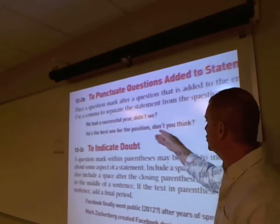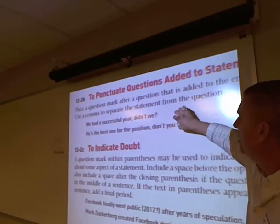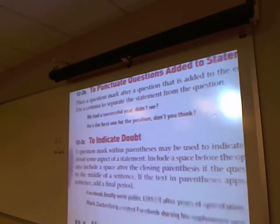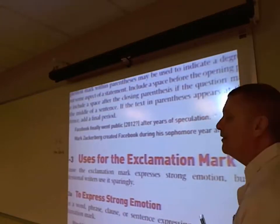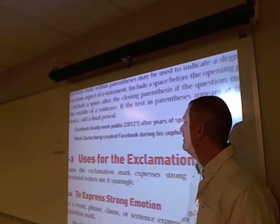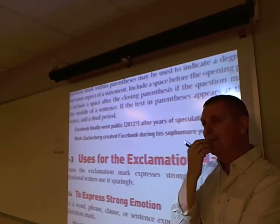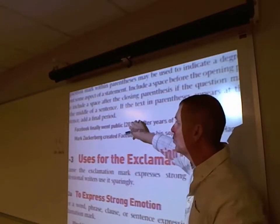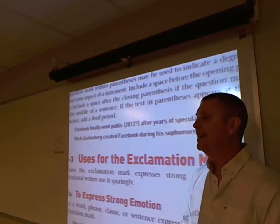To indicate doubt: if you're not sure of a specific year, you can put it in parentheses and add a question mark. 'Facebook finally went public in 2012(?)' — placing that signals to readers you're not certain of the correct year. You should go to the trouble of looking it up, but if you don't, put a question mark and associate it with what's questionable.